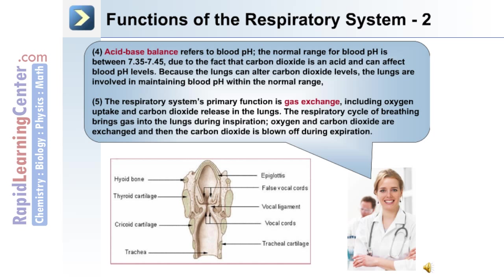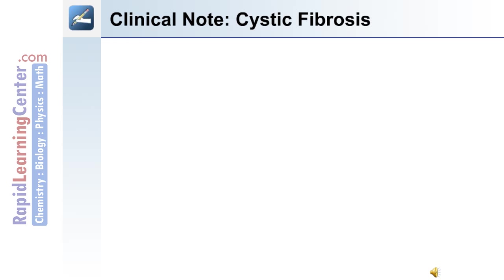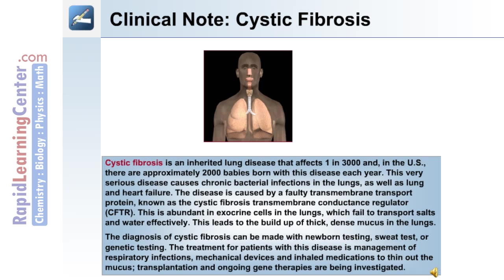The respiratory system's primary function is gas exchange, including oxygen uptake and carbon dioxide release in the lungs. The respiratory cycle of breathing brings gas into the lungs during inspiration, where oxygen and carbon dioxide are exchanged, and carbon dioxide is blown off during expiration. The following is a clinical note on cystic fibrosis.